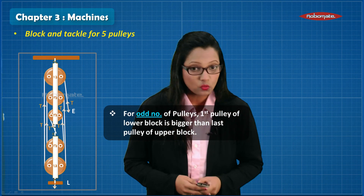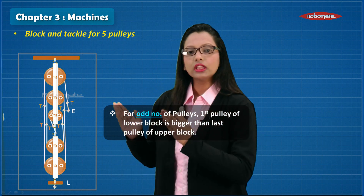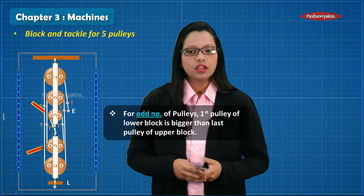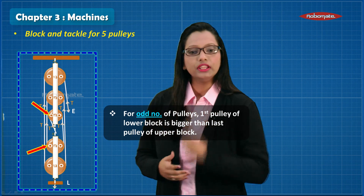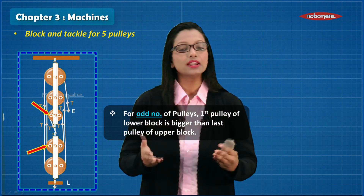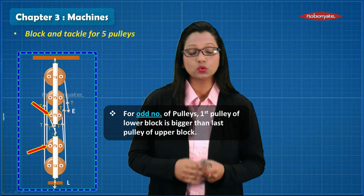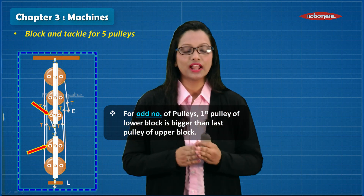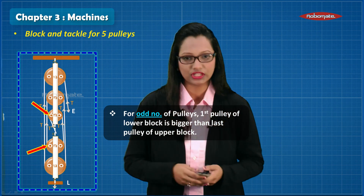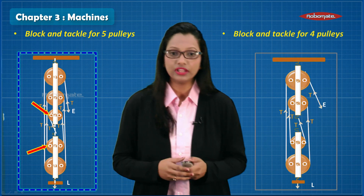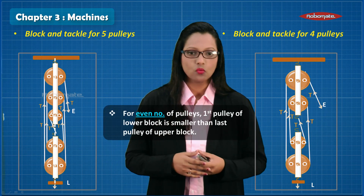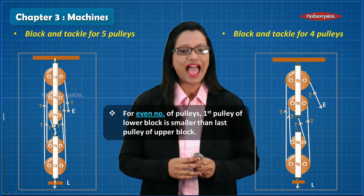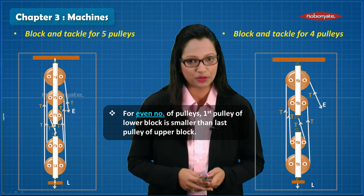A very important fact: when talking about five pulleys — an odd number of pulleys — the first pulley of the lower block is bigger in diameter compared to the last pulley of the upper block. This ensures the strings are not touching each other. For an even number of pulleys, this is vice versa: the first pulley of the lower block is smaller in diameter compared to the last pulley of the upper block.